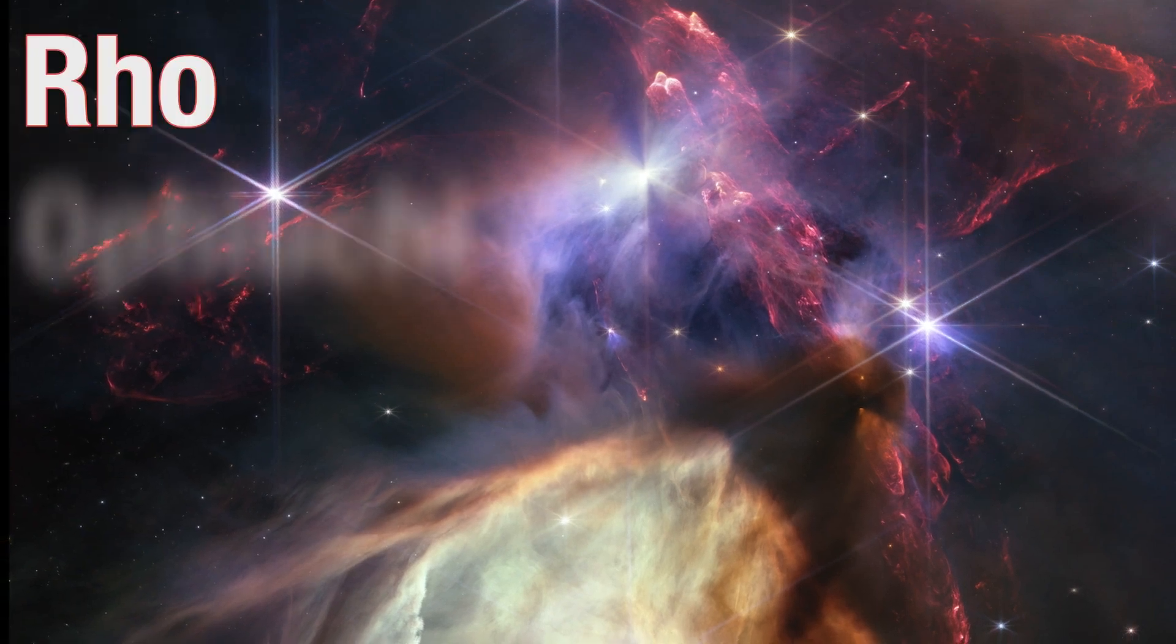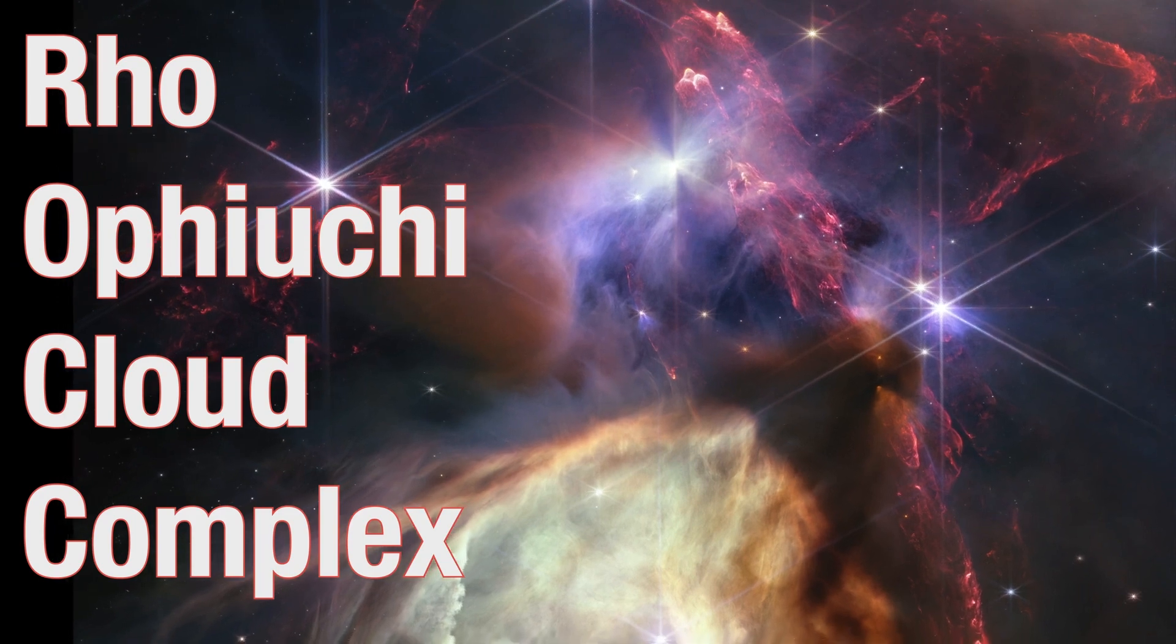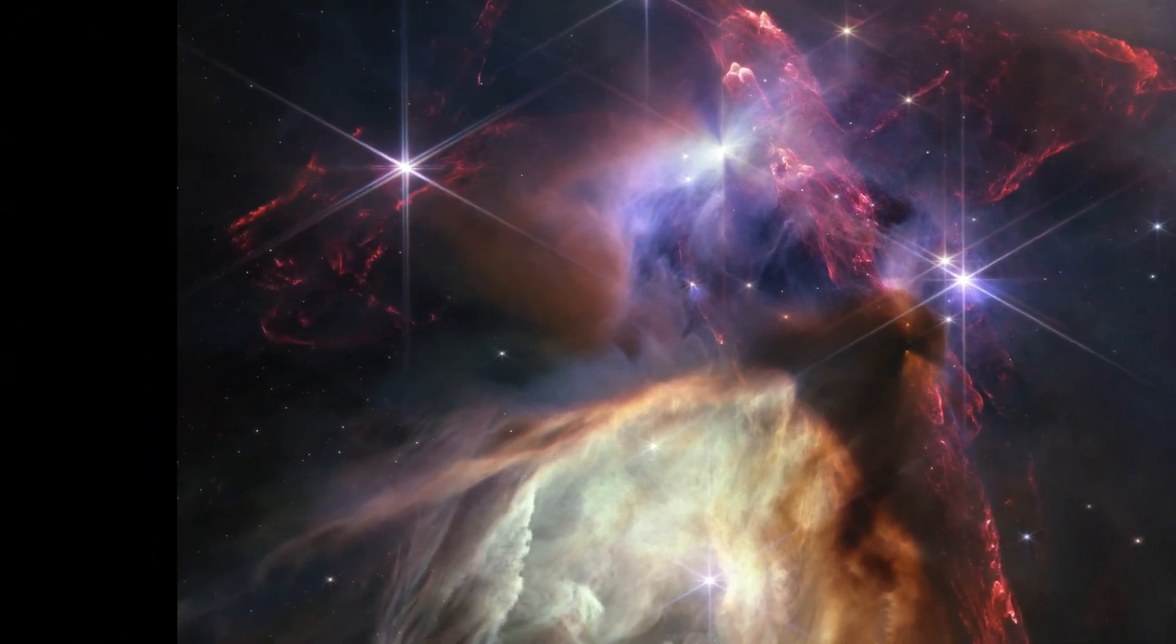The Rho Ophiuchi Cloud Complex, a small star-forming region, is located 390 light-years away, the closest star-forming region to Earth.